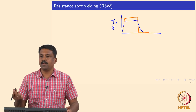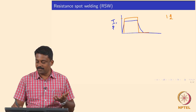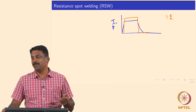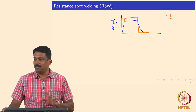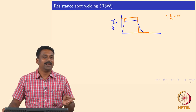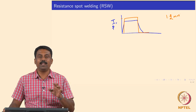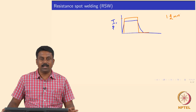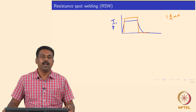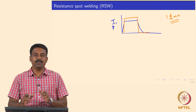Typically the current will be in a few kilo amperes. For 1.2 mm thick steel — which is very commonly used in engineering applications, especially for automotive industries — we use about 4 to 8 kilo amperes based on the weld nugget size required. The load would be around 3 or 4 kilo newtons. That is the typical current and load used, and it is a very simple thermal cycle.